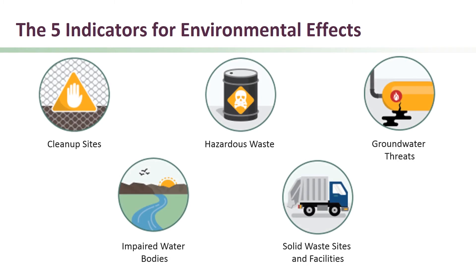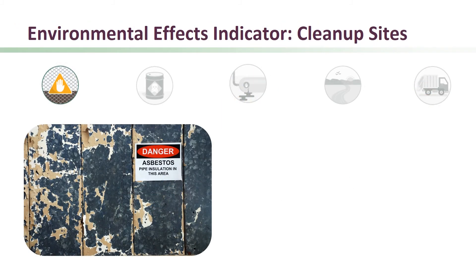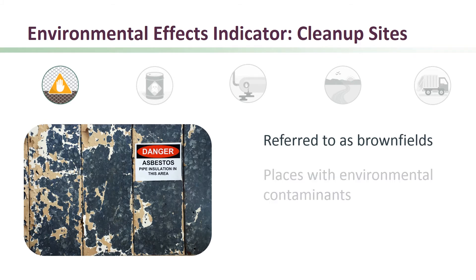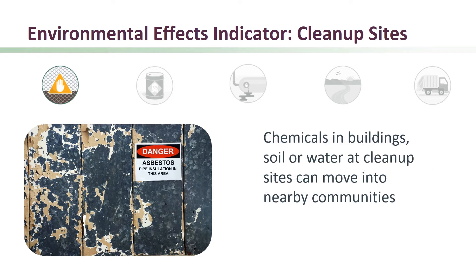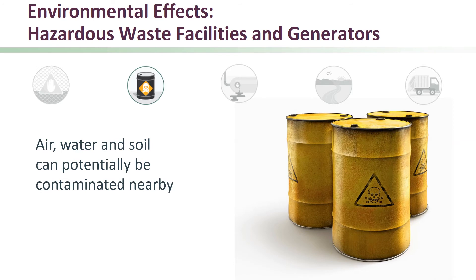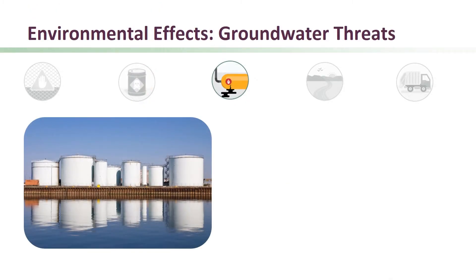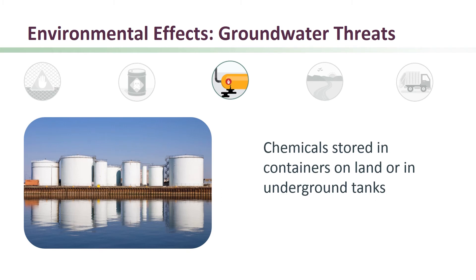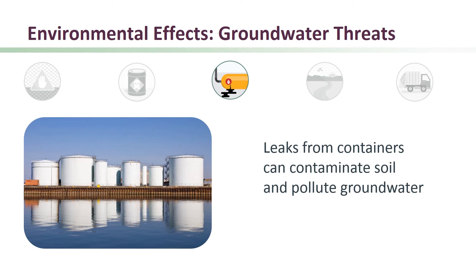Next are the five environmental effects indicators, which reflect adverse environmental conditions caused by pollutants. Cleanup sites, some of which are referred to as brownfields, are places with environmental contaminants that require remediation. Chemicals in buildings, soil, or water at cleanup sites can move into nearby communities through the air or by movement of groundwater. Hazardous waste facilities recycle, treat, store, or dispose of waste. Many businesses generate hazardous waste that is transported to these facilities, and air, water, and soil can potentially be contaminated near these waste generators and facilities. Groundwater threats are chemicals which are often stored in containers on land or in underground tanks; leaks from these containers or tanks can contaminate soil and pollute groundwater.